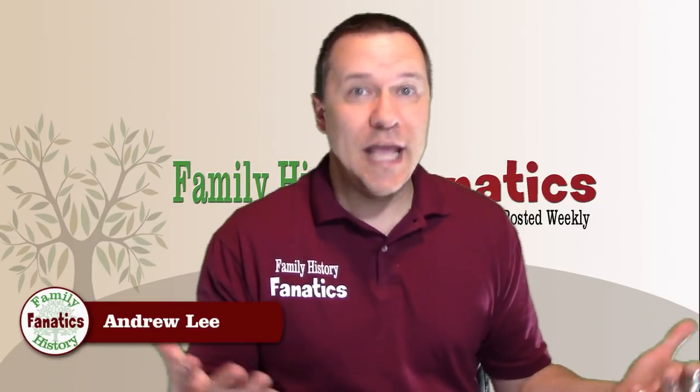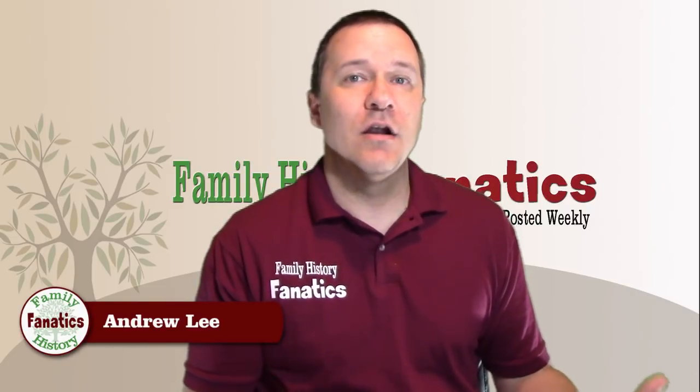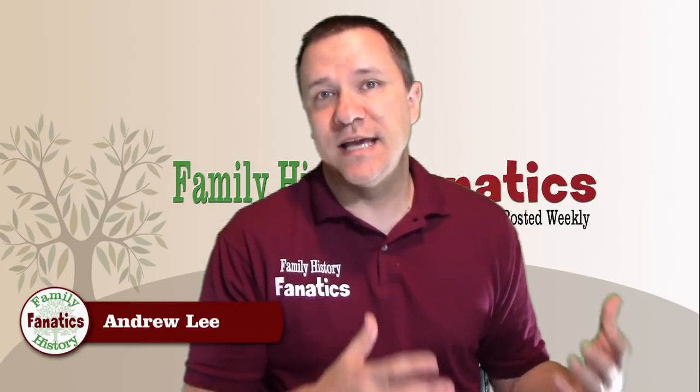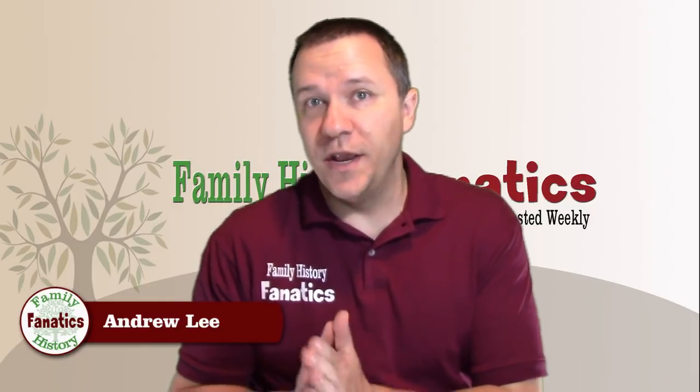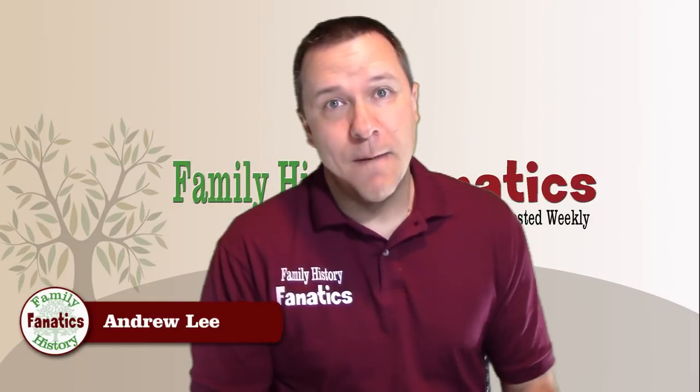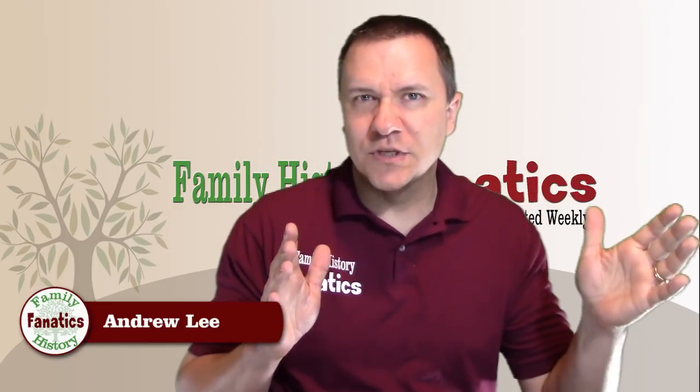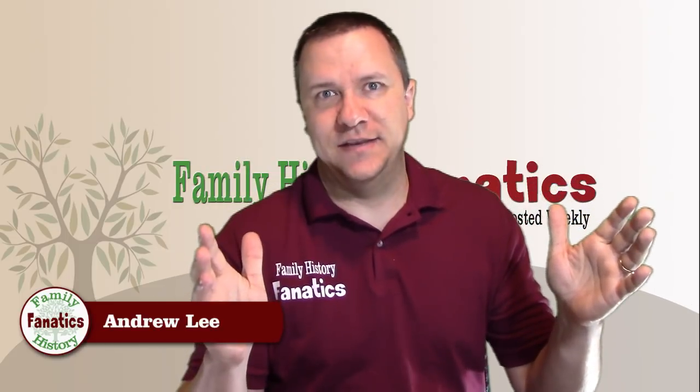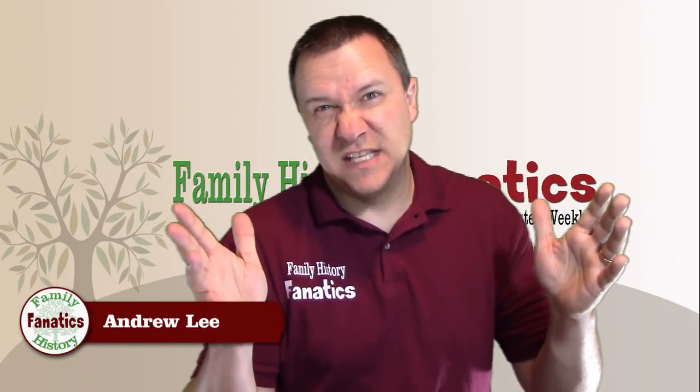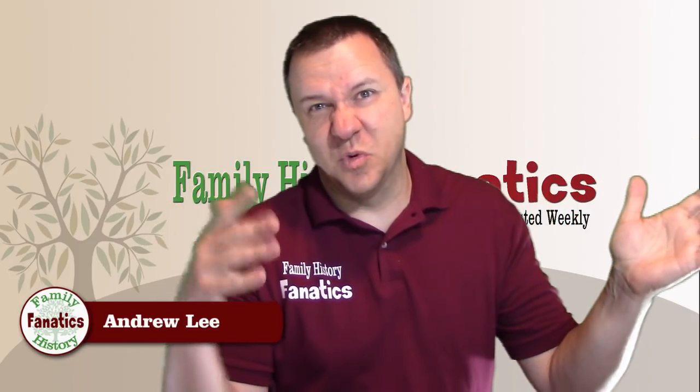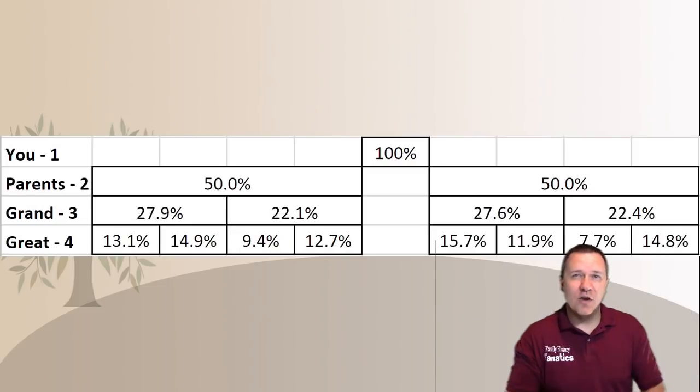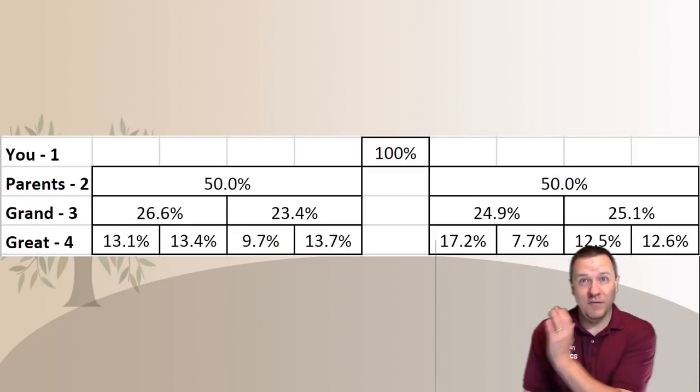For instance, on average you share approximately 25% of DNA with each one of your grandparents. But in actuality that range is somewhere between 20% and 30% usually. Except when it's larger or smaller. So this helps us to understand the first part of the computer model.